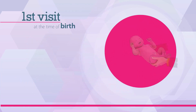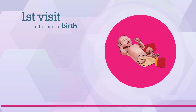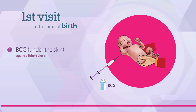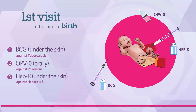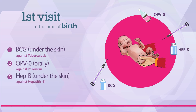The first visit is scheduled at the time of the baby's birth. On this visit, the child is administered BCG vaccine under the skin in the right upper arm for protection against tuberculosis. OPV0 vaccine is given orally to protect against polio, and the Hepatitis B vaccine is administered in the left thigh to protect against hepatitis B.